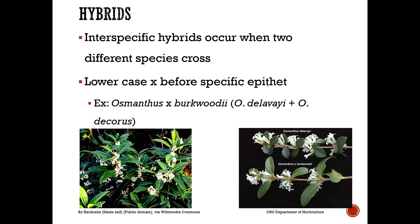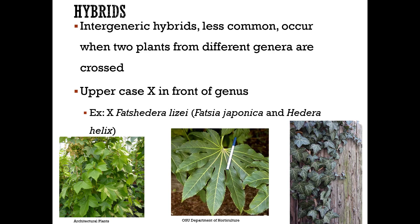Hybrids include interspecific hybrids, where two different species cross, indicated by a lowercase x before the specific epithet — for example, Osmanthus x burkwoodii, a cross between Osmanthus delavayi and Osmanthus decorus. There are also intergeneric hybrids, which are rare, indicated by an uppercase X before the genus name — for example, x Fatshedera lizei, a cross between Fatsia japonica and Hedera helix.